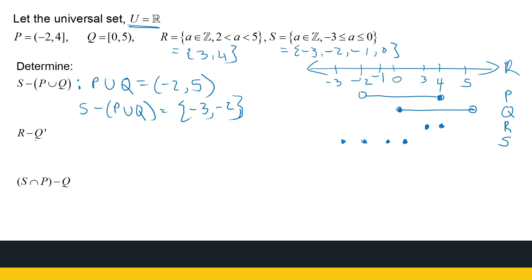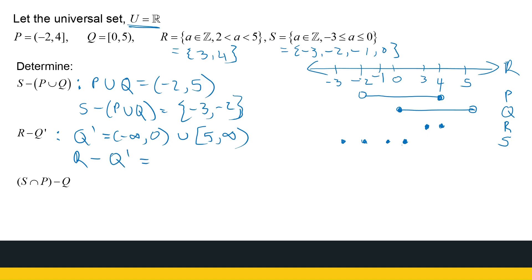The next one is R without Q's complement. I first need to find Q's complement. Q is from 0 to 5, and the universal set is all real numbers, so Q's complement is everything except that: from minus infinity to 0, and then from 5 to infinity. Now R has the numbers 3 and 4. Neither 3 nor 4 is in Q's complement, so the result is just the set R.